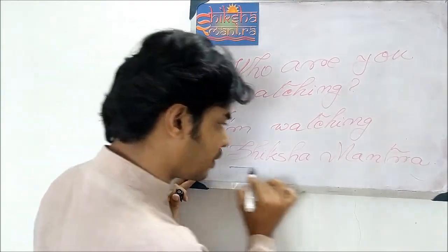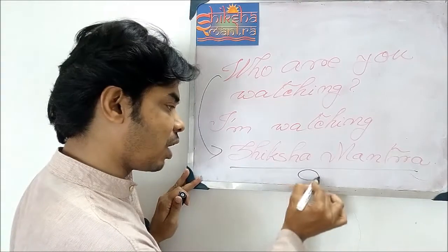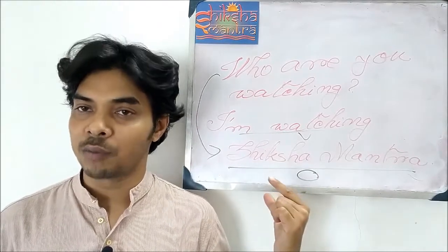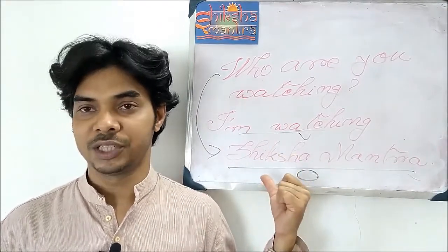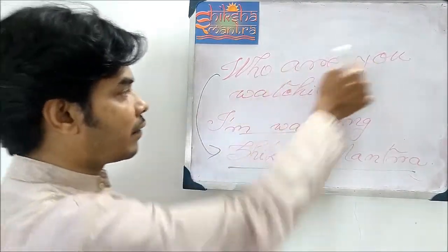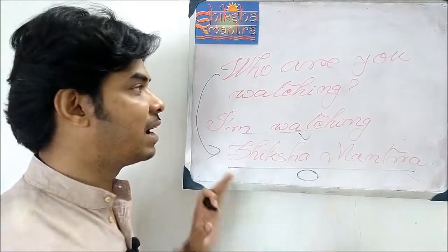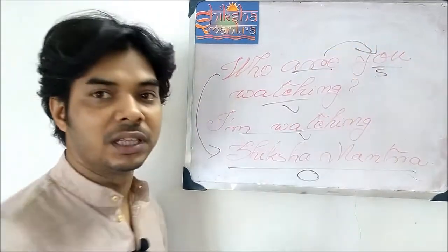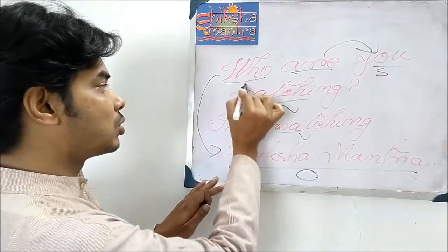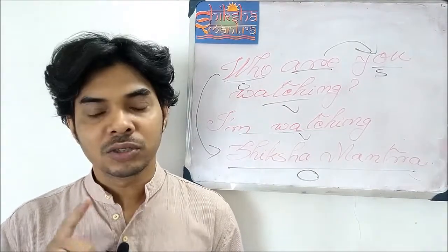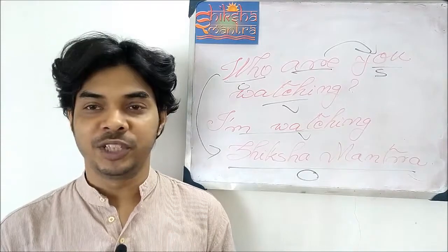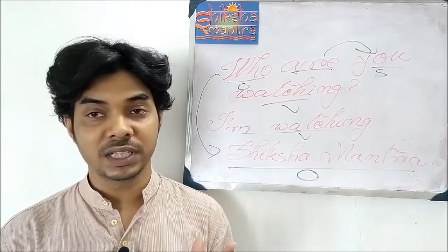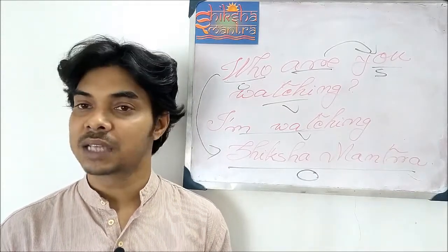You are watching Shiksha Mantra — that is the answer. So here 'who' is replaced with an object — 'Shiksha Mantra' — which is the object of the verb. This means 'who' comes in the object position. In the interrogative sentence 'Who are you watching?', 'you' is the subject, 'are watching' is the verb conjugated with 'you', and so 'who' is used here as object. That's how we can use 'who' for object.